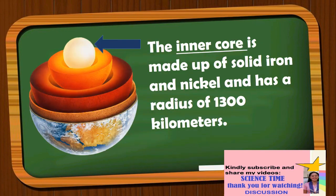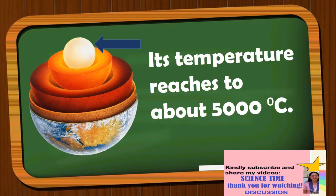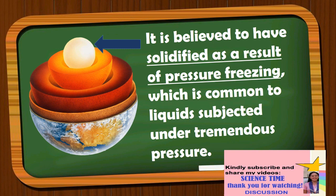The inner core is made up of solid iron and nickel and has a radius of 1,300 kilometers. Its temperature reaches about 5,000 degrees Celsius. Although the extreme temperature could have melted the iron and nickel, it is believed to have solidified as a result of pressure freezing, which is common to liquids subjected to tremendous pressure.